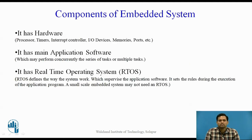Now we will see the components of an embedded system. An embedded system has hardware consisting of a processor, timer, interrupt controller, IO devices, monitors, memories, ports, etc. It also has main application software, which may perform a series of tasks or multiple tasks concurrently.